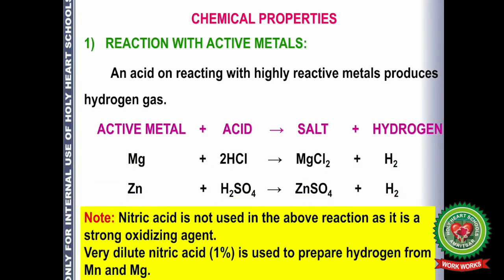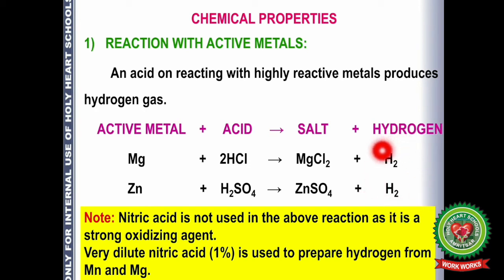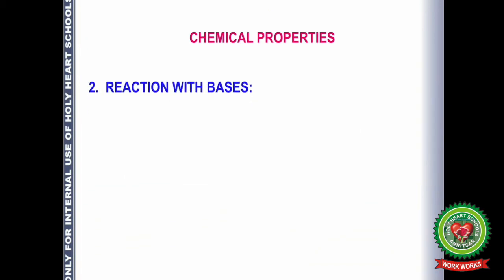We should note that nitric acid is not used in this reaction because nitric acid is a strong oxidizing agent — it will not produce hydrogen but instead converts any formed hydrogen into water. If we need to produce hydrogen using nitric acid, the acid must be very dilute, and only manganese and magnesium can produce hydrogen with very dilute nitric acid.